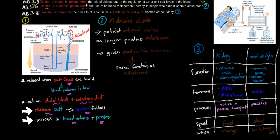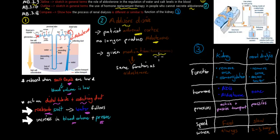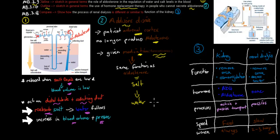The next dot point says 'outline' the use of hormone replacement therapy in people who cannot secrete aldosterone. For example, people with Addison's disease have an adrenal cortex that doesn't work properly and doesn't release aldosterone. So instead, we give them a medication called fludrocortisone — that's the replacement therapy. It has the same function as aldosterone: it causes more salt to be reabsorbed, and water follows, increasing blood volume and blood pressure. The only negative is that you cannot finely control it — if you overdose, there's no way to stop it acting — whereas aldosterone is finely balanced.